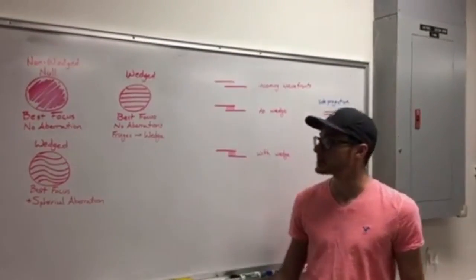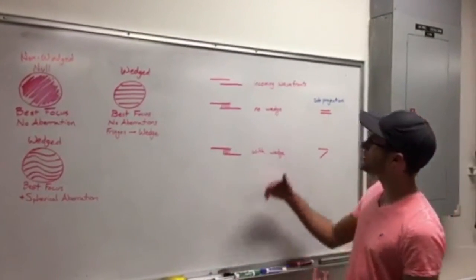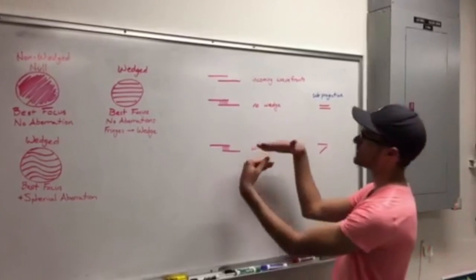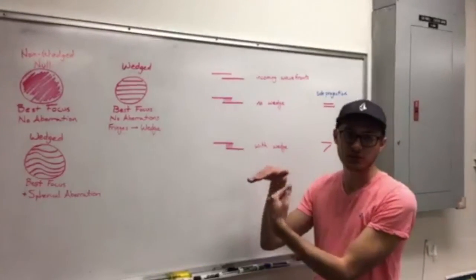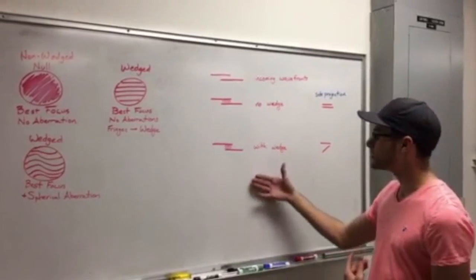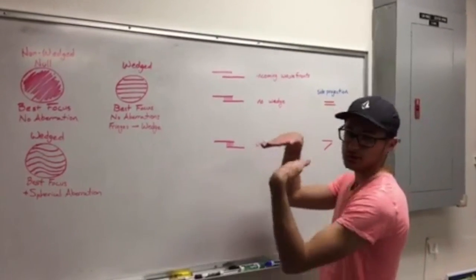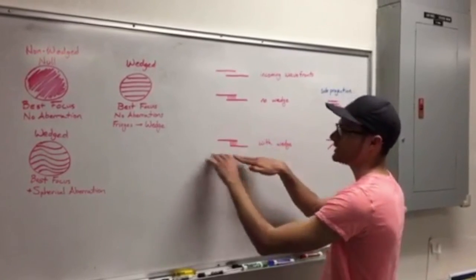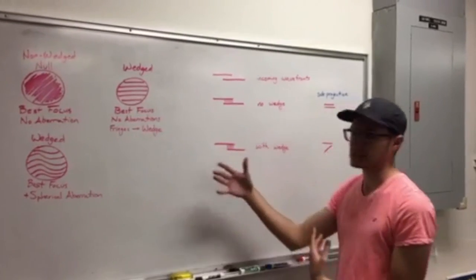For a system at best focus with no aberrations present, the two incoming wavefronts will be stacked on top of each other, and with a non-wedged interferometer, they're going to have a constant OPD inside. With a wedge, from a certain perspective, it'll look the same, and we'll have this constant OPD, which will cause these fringes.